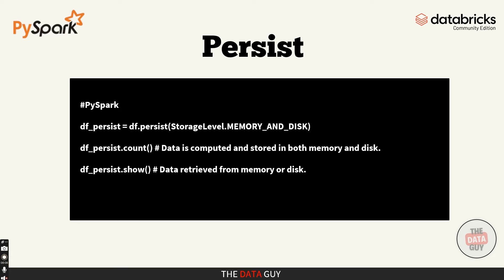Now let's talk about persist. Persist is like cache but gives you more control over where and how Spark stores the data. While cache stores data in memory by default, persist allows you to specify different storage levels like memory, disk, or a combination of both. For example, if your data is too large to fit entirely in memory, you might want to persist it to both memory and disk, so Spark will use memory for as much as it can and spill the rest to disk. As you can see on screen, you use the persist method and specify where you want to store your data — in memory or memory and disk.